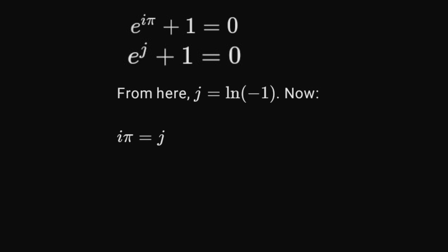From here, log negative 1 equals the value of j. Now, i times pi equals j.